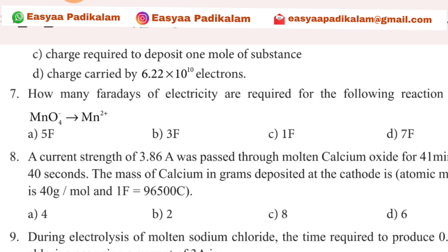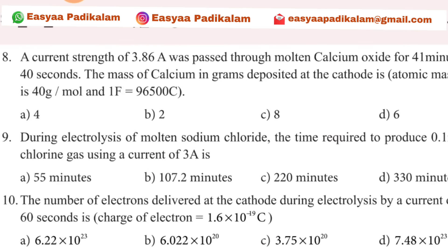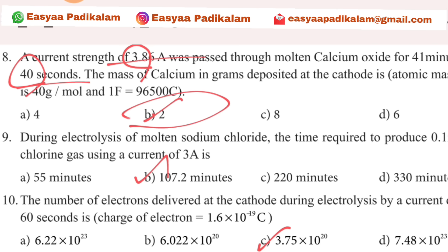Eighth question: current strength of 3.86. If we take it 40 seconds, 3.86 is 38, so the answer is minus one is 48. If you want 2, then we can take this option.